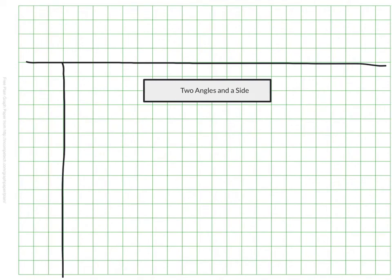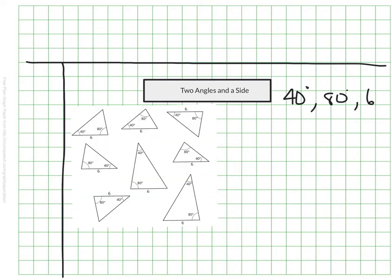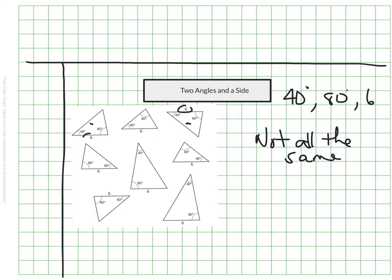There are also times when you're given two angles and just one side — for example, a 40-degree corner on one end, 80 degrees on the other, and one side of length 6. Looking at the examples, there are a myriad of triangles meeting that criteria. All of them have 40 degrees in one corner, 80 degrees in another, and a length of 6 somewhere on the triangle. Not all of these are the same, so there would not be one unique triangle created from just two angles and one side.